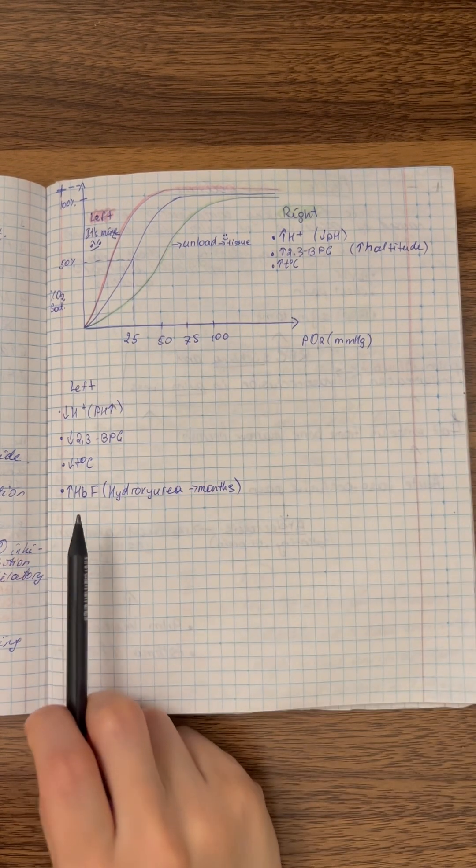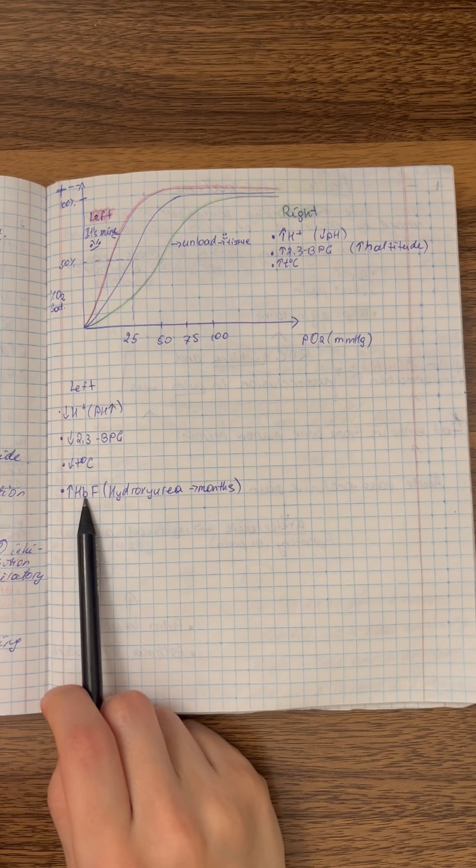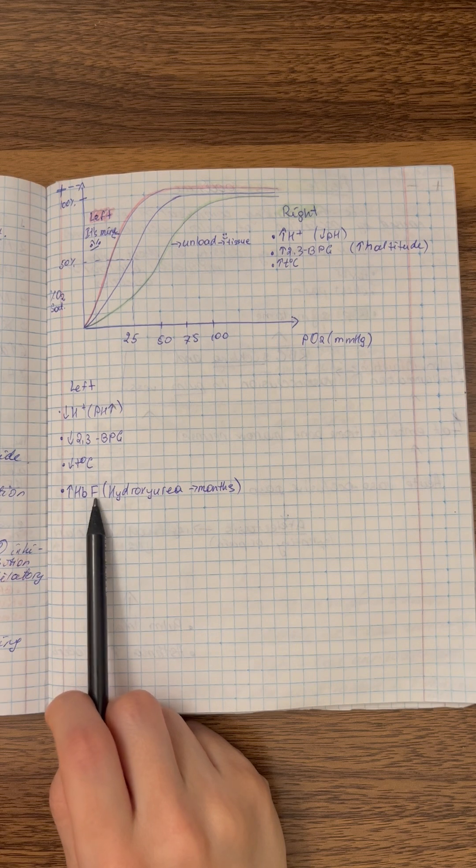Additionally, we need to know when we have an increase in the amount of hemoglobin F, the dissociation curve is shifted to the left too.